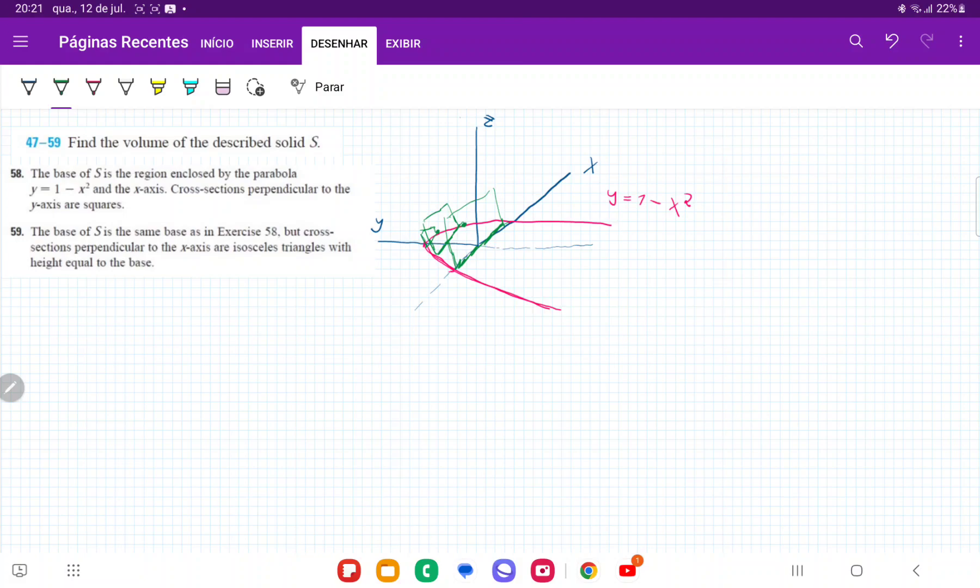So let's think about how we are going to be integrating this. Basically, we're summing up all these squares, and then we're summing them up across the y-axis. We're going from 0 all the way up to y is equal to 1, where that parabola here has max height.